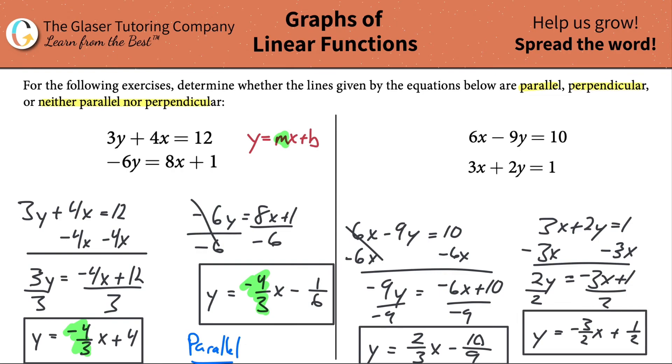Now all we have to do is compare the slopes. Positive 2 thirds, negative 3 halves. They are indeed negative reciprocals. One is positive, one is negative, check. And then they're reciprocals, 2 over 3, 3 over 2. That means that these are perpendicular. And voila.